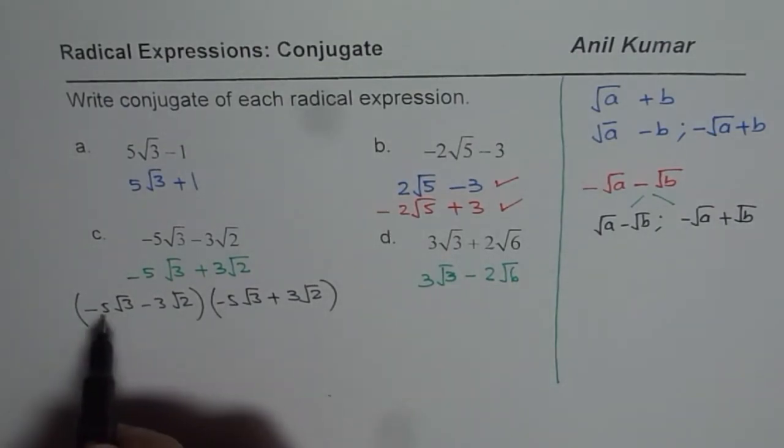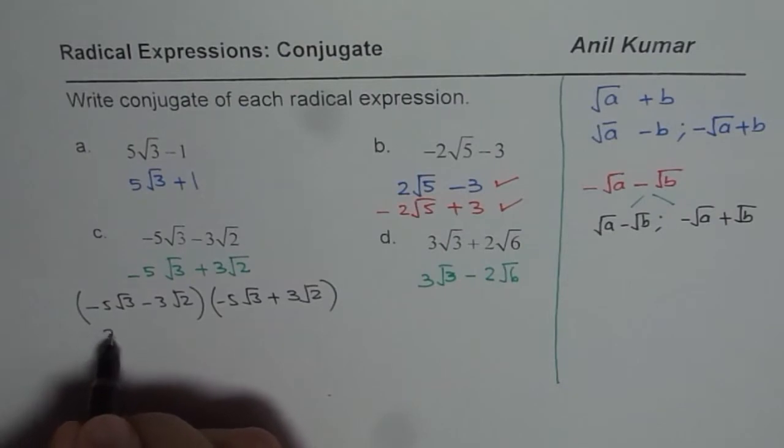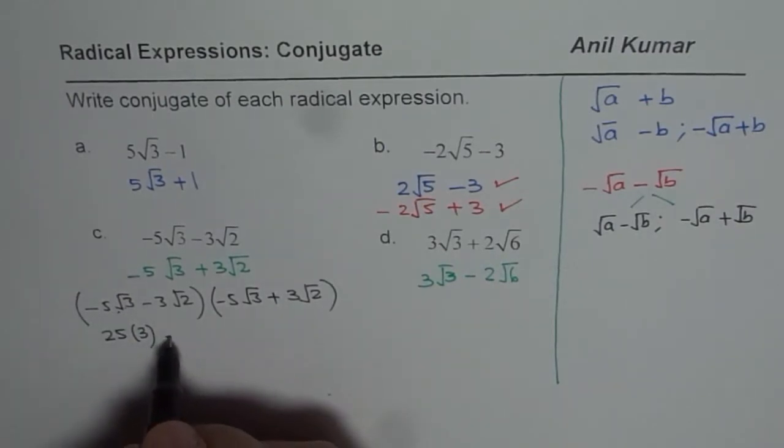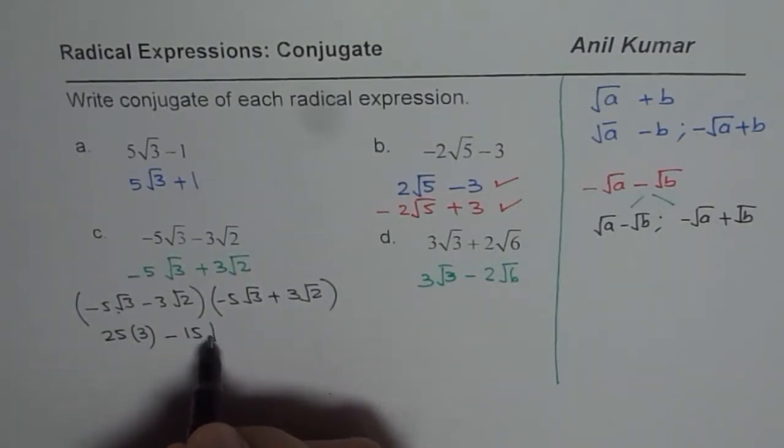So distribute the property. When you multiply minus times minus you get plus, 5 times 5 is 25. So you get 25. √3 times √3 is 3. When you multiply this by the second term we get negative 15√6.